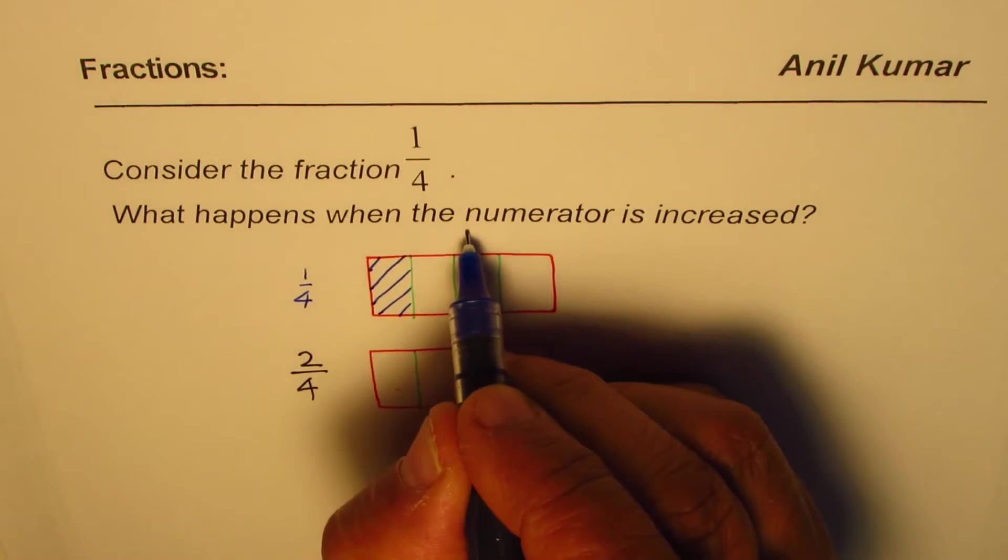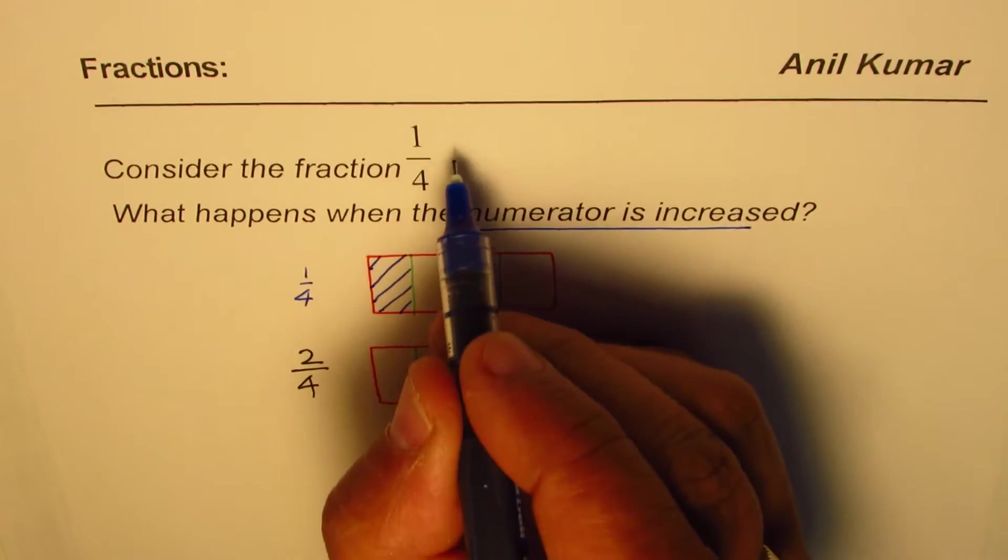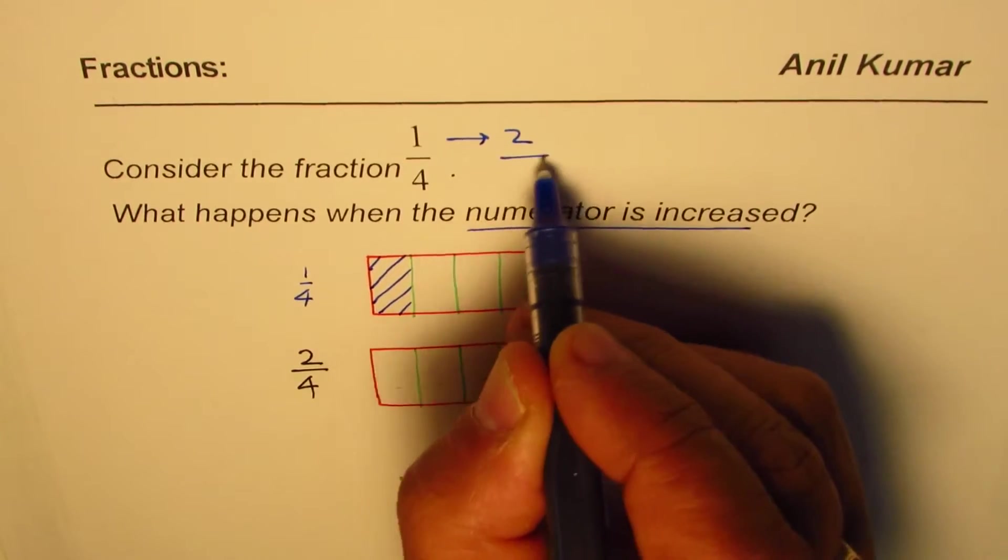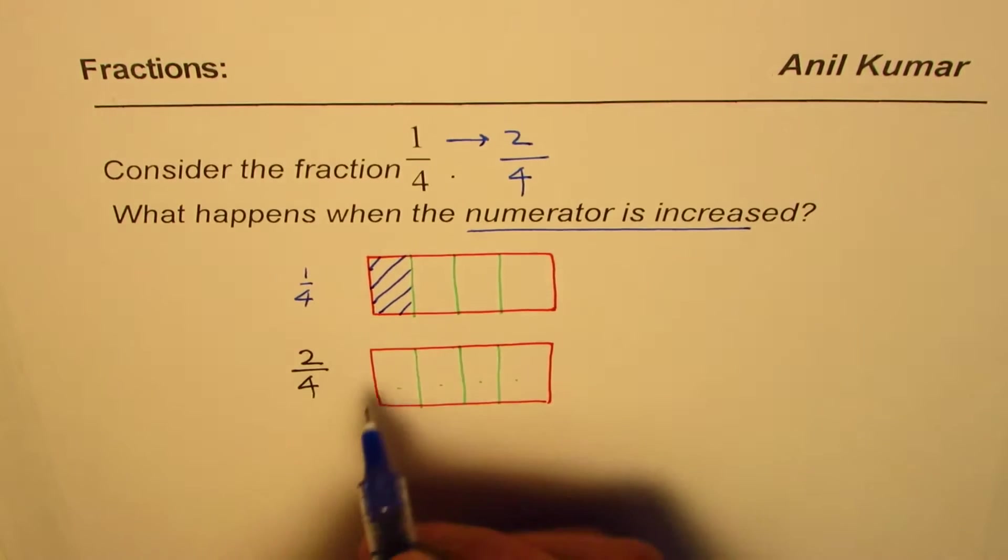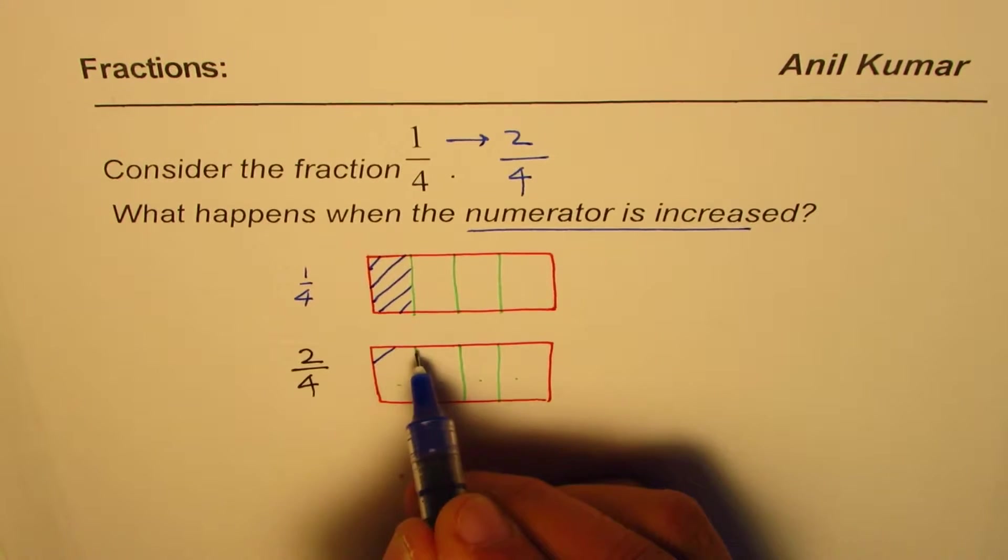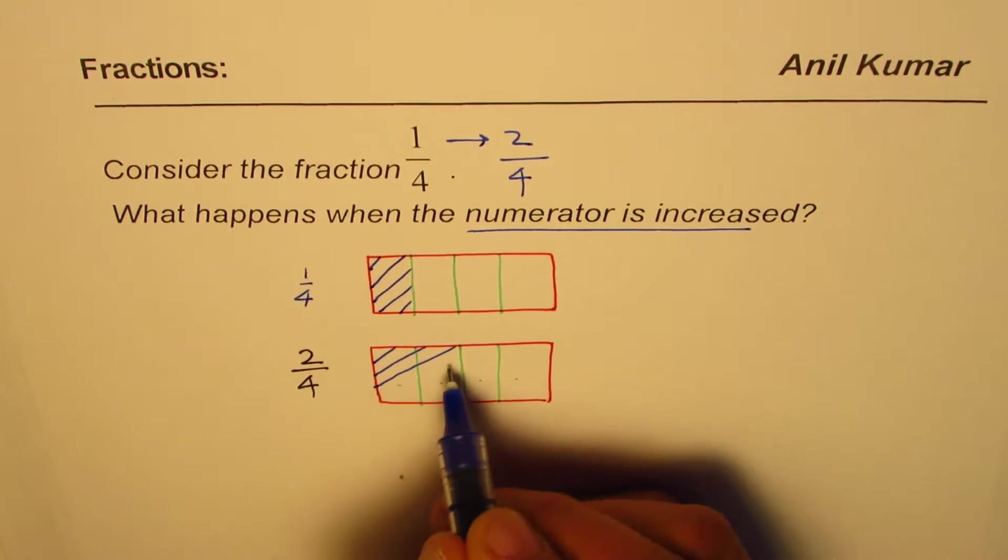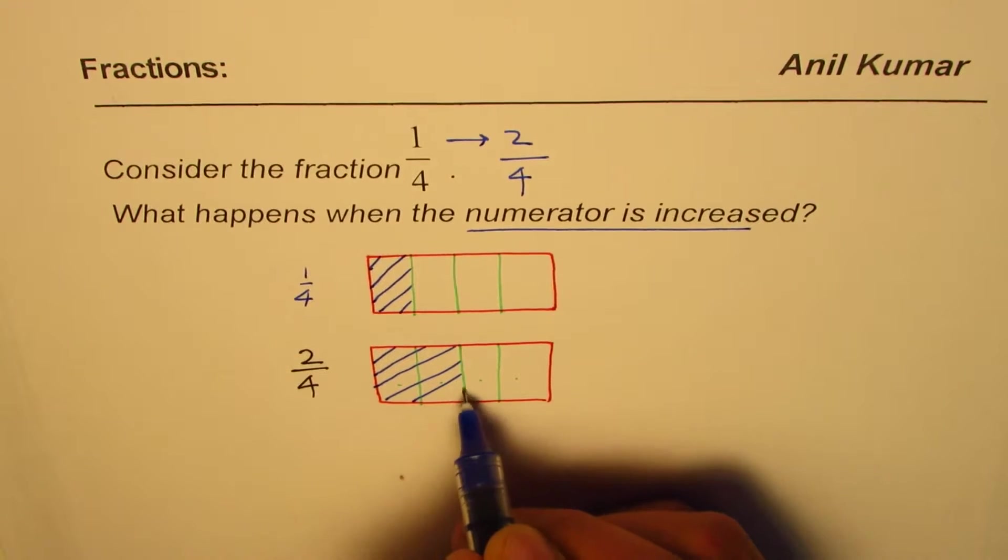When I say numerator is increased, so I'm increasing from 1 to 2, right? So I get 2 over 4. So 2 over 4 means we'll share 2 this time. So what you get is that much.